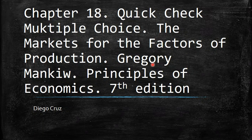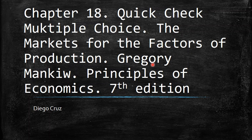Hi, welcome everybody. We're going to talk today about chapter 18, the quick check multiple choice. We are discussing the markets for the factors of production. This is the book by Gregory Mankiw, Principles of Economics.